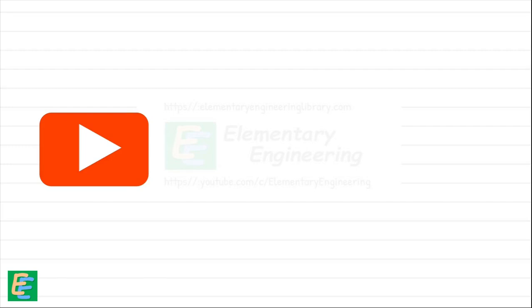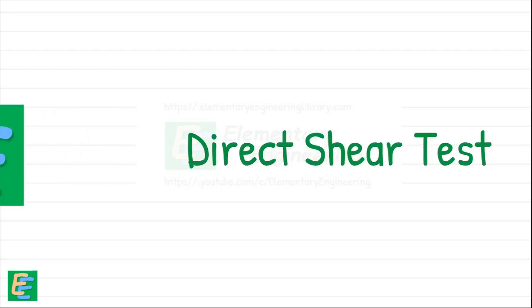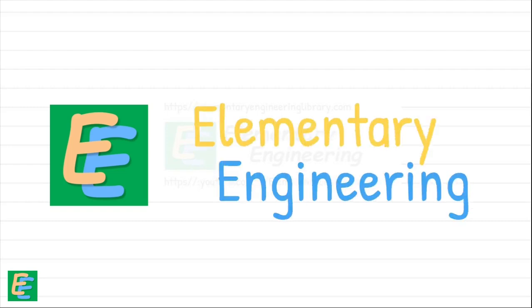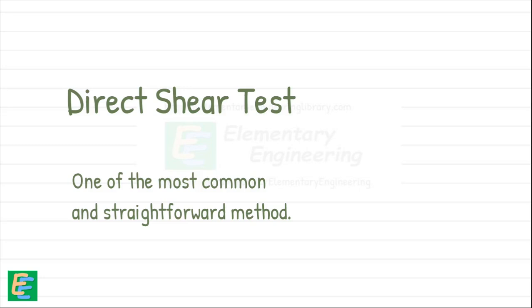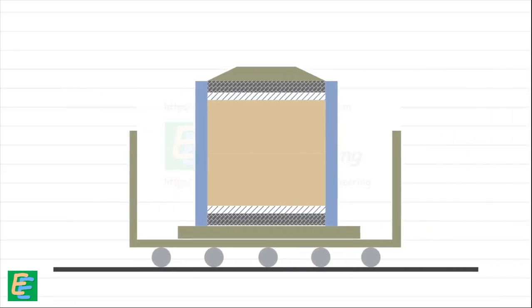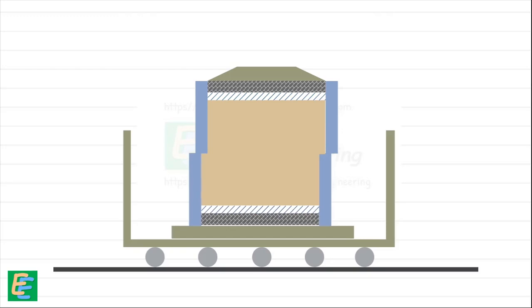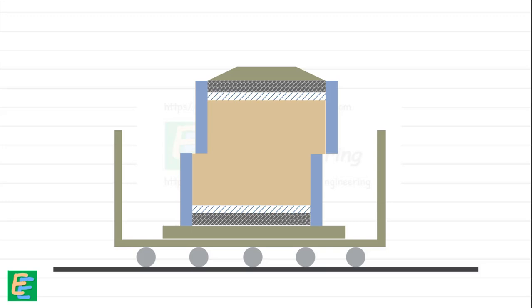There are numerous ways to determine the shear strength of the soil. In this video we will dive into one of the most simple and widely used methods: the direct shear test. The direct shear test is considered one of the most common and straightforward methods to determine the shear strength of the soil. It is a laboratory test where, using machinery, the soil sample is literally sheared across its width, splitting it into two halves along a horizontal plane in the middle.